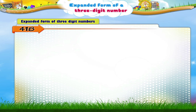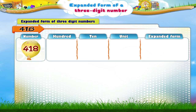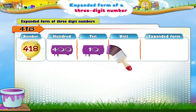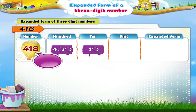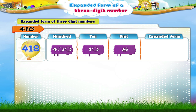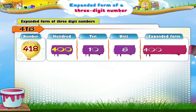Expanded form of a three-digit number. Let us take the number four hundred and eighteen. Four is in the hundreds place, so its place value is four hundred. One is in the tens place, so its place value is ten. Eight is in the units place, so its place value is eight. So, the expanded form of four hundred and eighteen is four hundred plus ten plus eight.